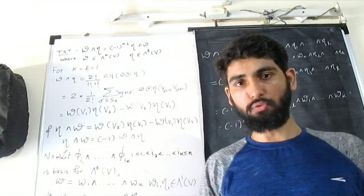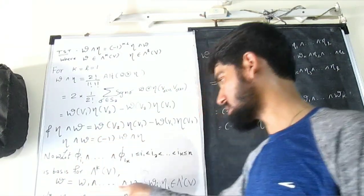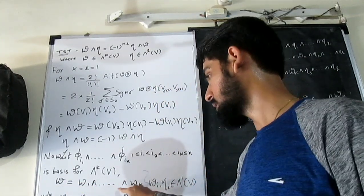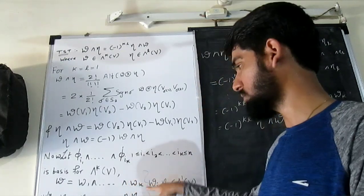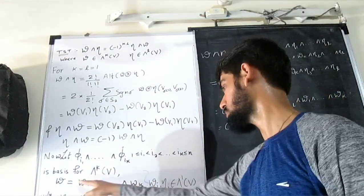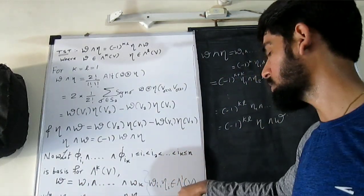So if you consider any element inside the k-form of V, we can write in this term. That means we are writing our omega same as omega 1 wedge product dot dot dot, we have taken k wedge products, where each of the omega i's are element of one form on V.